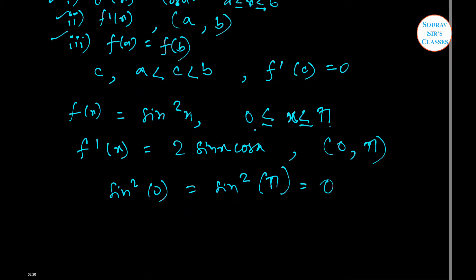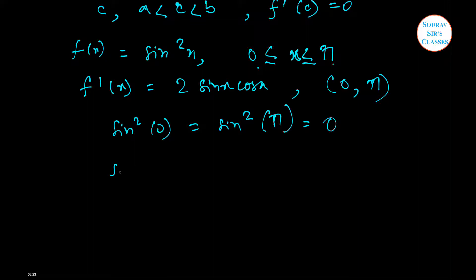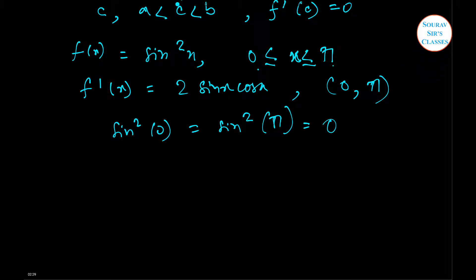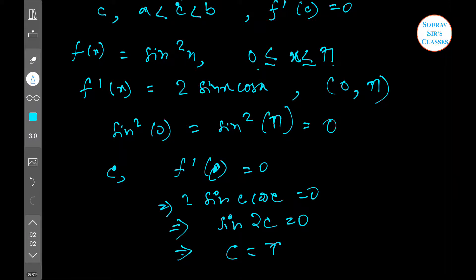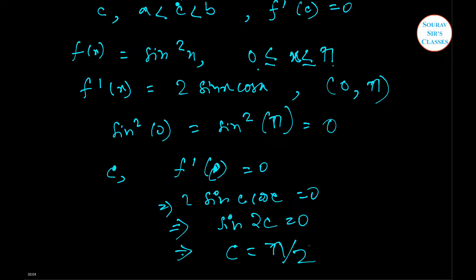All these three conditions are fulfilled. Hence there will be an element c such that f'(c) equal to 0, and our task will be to find this value of c. Here we are going to have 2 sin c cos c equal to 0, or we can write sin 2c equal to 0. From this we find the value of c, and hence this is our answer.